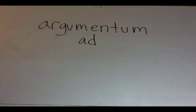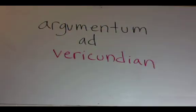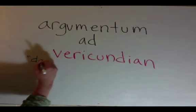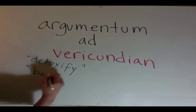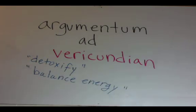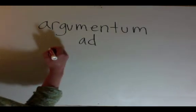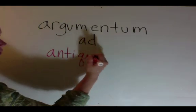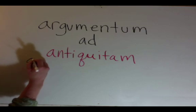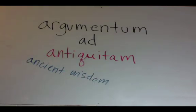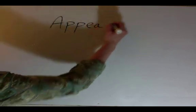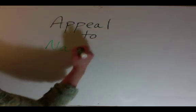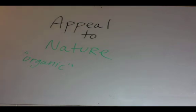An appeal to authority means that you use celebrities or fancy terminology to give your idea substance. Argumentum ad hominem is basically name calling your opponent or otherwise degrading the person. Appeal to tradition is the idea that if something is ancient, it must be correct.